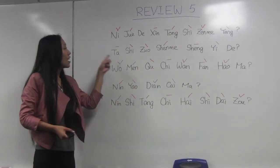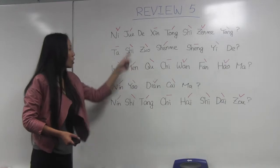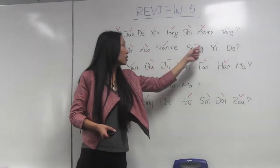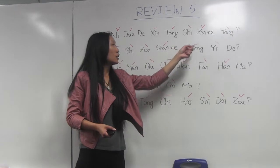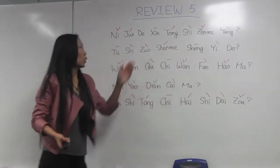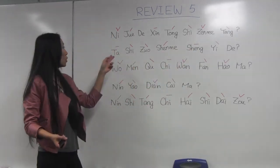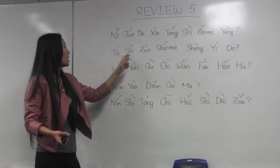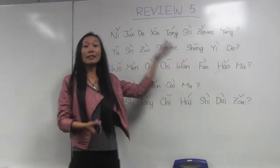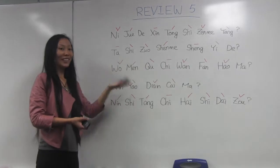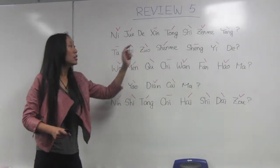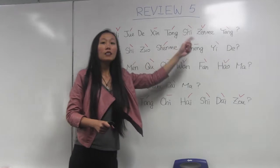他是做什么生意的? 生意 means 'business,' 做 means 'do.' So: he is doing what kind of business? What type of business is he doing? 他是做什么生意的?